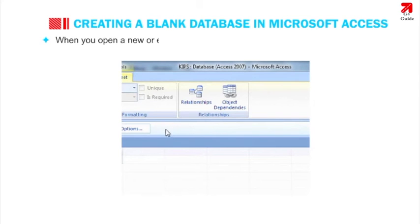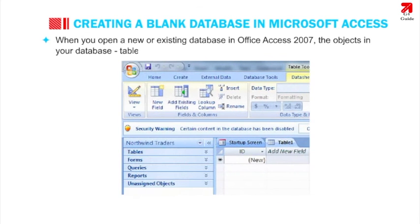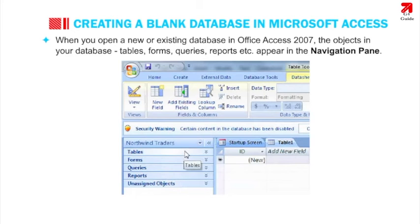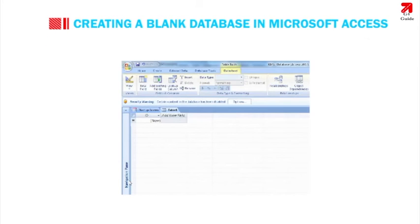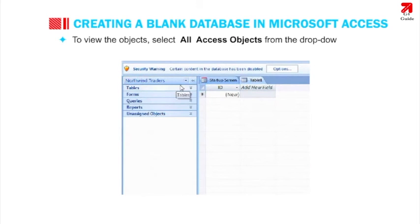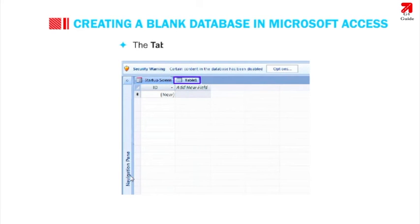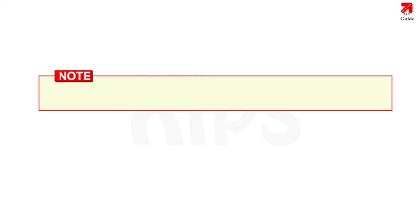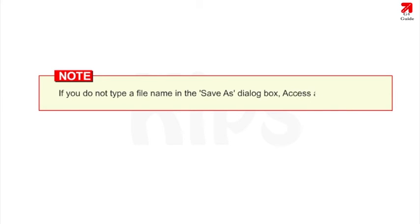When you open a new or existing database in Office Access 2007, the objects in your database — tables, forms, queries, reports, etc. — appear in the navigation pane. To view the objects, select all Access objects from the drop-down arrow in the Navigation pane. The tables tab is always selected by default. Note that if you do not type a filename in the Save As dialog box, Access adds one for you.